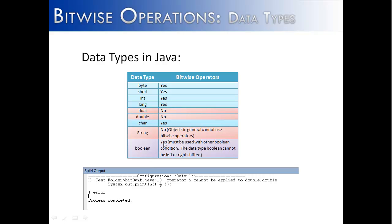Boolean can be, but they have to be used with other Boolean statements. And the Boolean data type cannot be left or right shifted. So, partially yes it can, partially no it can't. Because it would be kind of odd to shift, because it's only one byte, and you're really only saying yes or no inside of there.